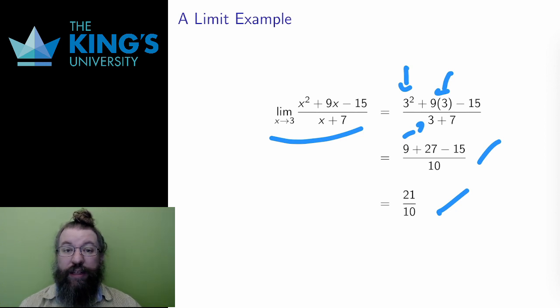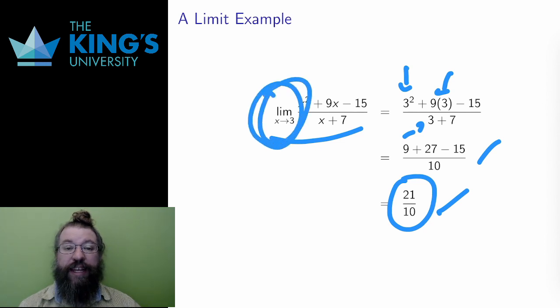Now, the limit is still a statement about approach. The value of the function at x equals 3 is 21 over 10, but the limit equal to 21 over 10 says that as the input approaches 3, the output approaches 21 over 10. Even though I evaluate the function to solve the limit, the limit is still a statement about approach, about process, about getting closer and closer to something.